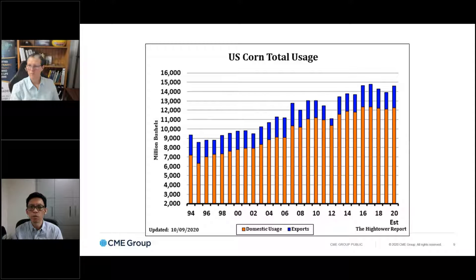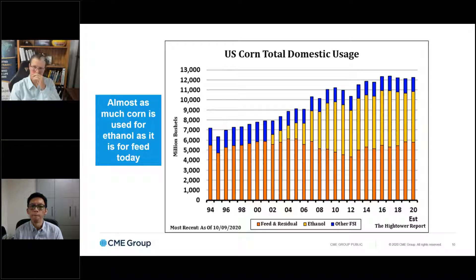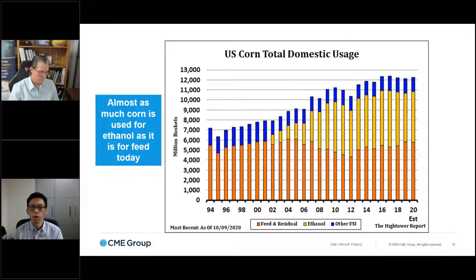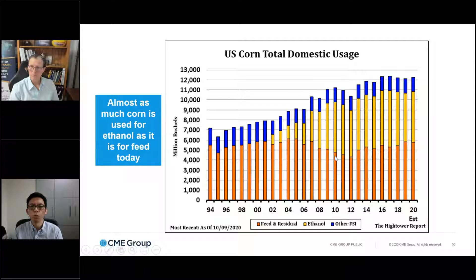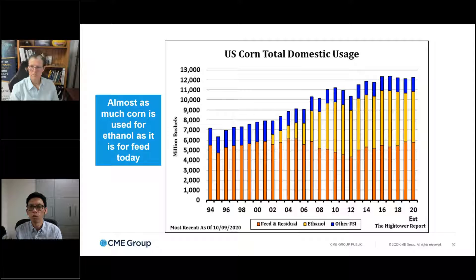On the usage side, it follows a similar pattern. Once upon a time, most of the corn was used for feeding animals and exports. But beginning in the early 2000s, you see this yellow bar that keeps growing every year — primarily driven by ethanol demand in the United States. A lot of corn-based ethanol has begun to be produced over the years. Today it's kind of reached a plateau, but it's very consistently taking up between 40 to 45% of all corn demand in the US. So ethanol is playing a very big part in demand and will continue to do so.